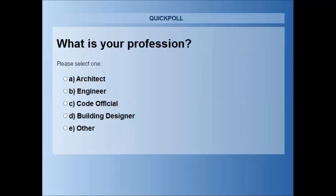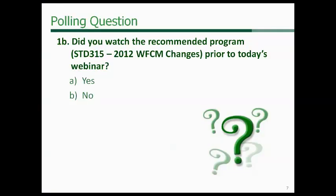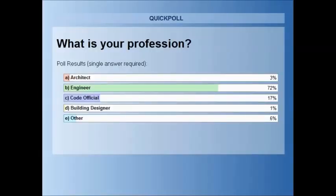This one's the easiest one. What is your profession? Architect, engineer, code official, building designer, or other. Today we've got 72% engineers, 17% code officials, 6% other, 3% architects, and 1% building designers.